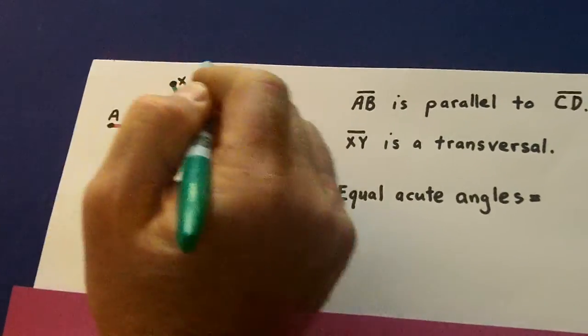Now if 1 is 60, then all these acute ones are also 60. So 4, 5, and 8 are 60. And then 7 is a big obtuse supplementary angle, so that's 120.